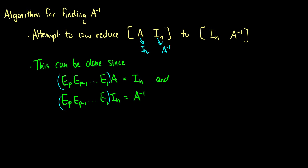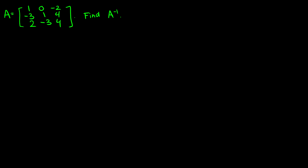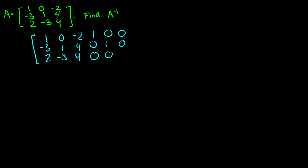So let's do an example. Here's A — we want to find A inverse. What we want to do is set up our matrix to include both A and the identity matrix. So we're going to have the entries 1, 0, -2 / -3, 1, 4 / 2, -3, 4, and then we'll throw the identity matrix beside it. Remember, the identity matrix should be the same size as your original matrix. If your matrix A is not square, this won't work. I'll put a line here to show this is A and this is the identity.